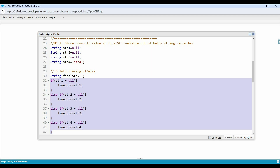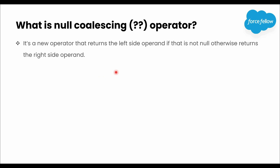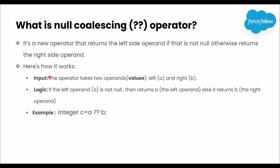First let's go through the definition. The Null coalescing operator is a new operator that returns the left side operand if it is not null, otherwise returns the right side operand. As input, it takes two operands - left and right - where operand means a value or variable.